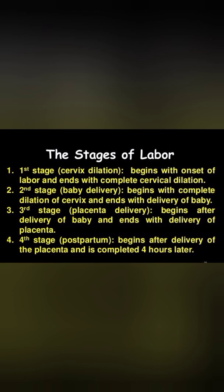The third stage of labor begins after expulsion of the fetus and ends with expulsion of the placenta and placental membranes. The fourth stage is a stage of observation for at least one hour after expulsion of the baby, during which maternal vitals, uterine retraction, and vaginal bleeding are monitored, and the baby is also examined to ensure both are healthy.